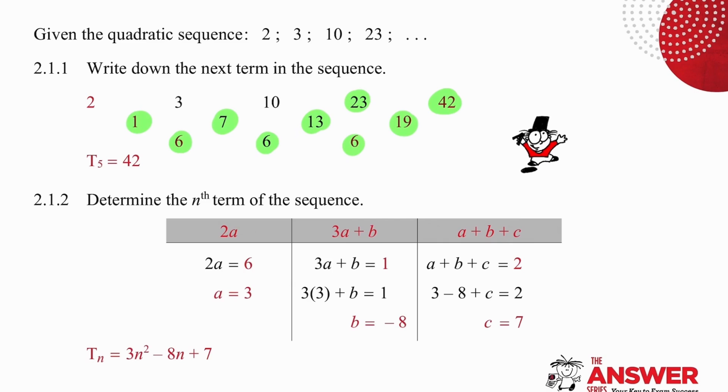Working out the formula, we simply equate 2a with 6 and work out that a is 3. We substitute a into the 3a plus b formula knowing that the result is 1, and work out that b is negative 8. Now we add the a and b values which we've already found and the c value to get an answer of 2, and work out that c is 7. So the nth term of this formula is given by 3n² minus 8n plus 7.